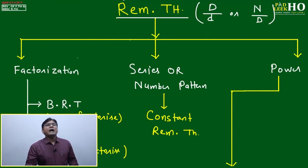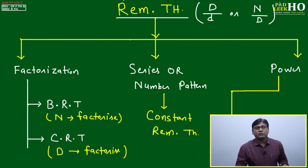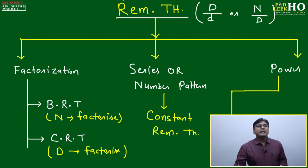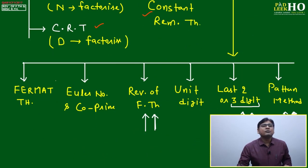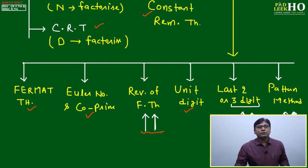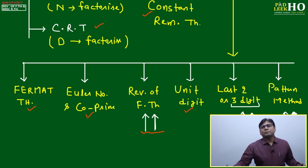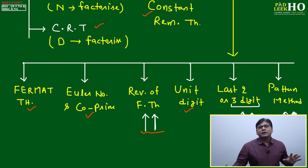Looking at the flow diagram of remainder theorem, we've categorized three types of numbers: one based on factorization, one on series or number patterns, and one on power. We've done BRT, CIT, Constant Remainder Theorem, and Fermat's Theorem. This session will cover the Reverse of Fermat's Theorem, last three digits, and the pattern method.